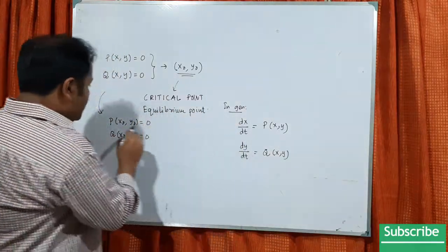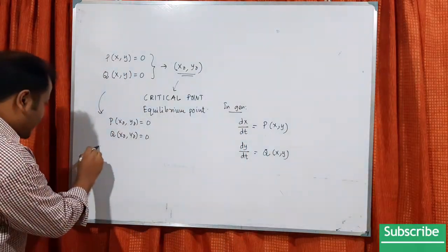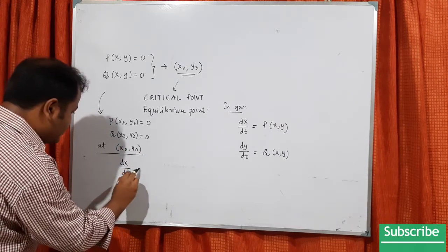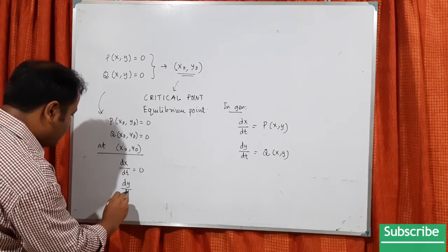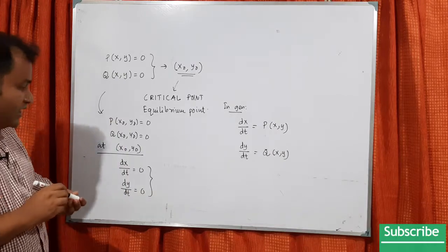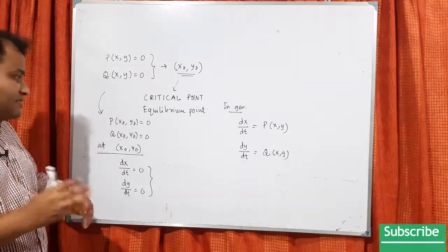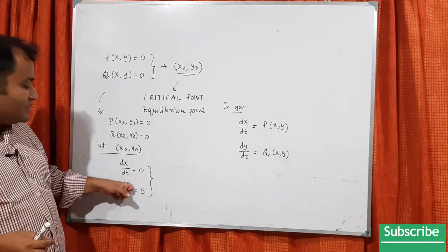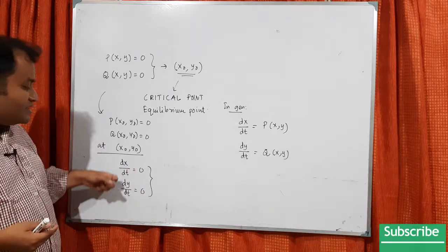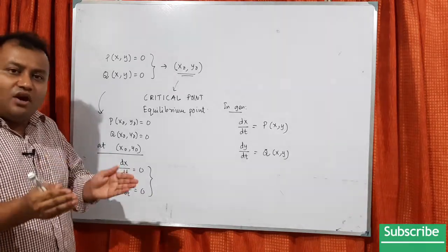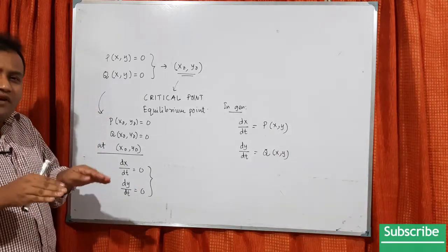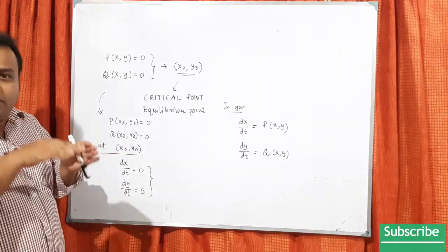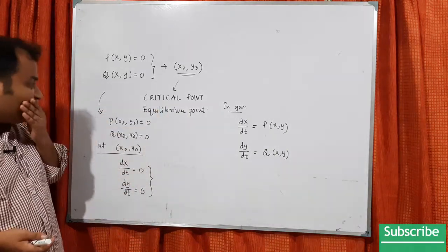At x₀, y₀, since P(x,y) = dx/dt and Q(x,y) = dy/dt, we have dx/dt = 0 and dy/dt = 0 at that point. The derivative means the growth — dx/dt is the growth of x with respect to t, and dy/dt is the growth of y with respect to t. When both are zero, the system is in a stable or silent position, which is why it is called an equilibrium point. For example, if you throw a stone in a calm pond, waves form and eventually disappear — when the growth becomes zero, that is the equilibrium.